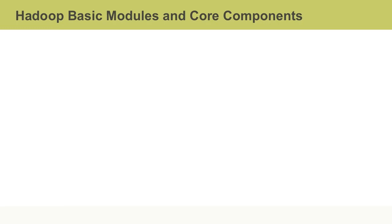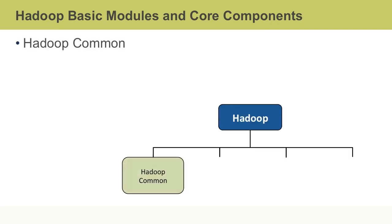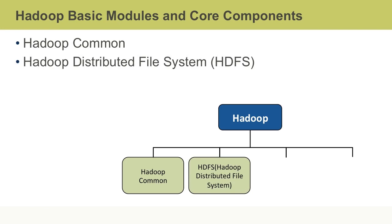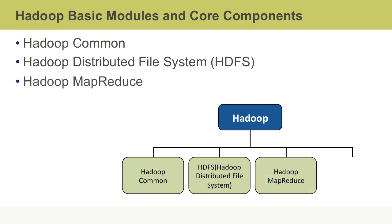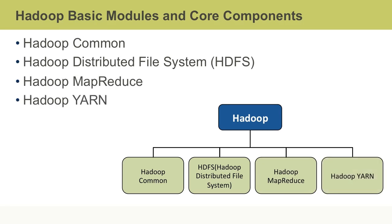The base Apache Hadoop framework is composed of four basic modules and two core components. The four modules include Hadoop Common, which contains libraries and utilities needed by other Hadoop modules; Hadoop Distributed File System, or HDFS, a distributed file system that stores data on commodity machines; Hadoop MapReduce, a programming model for large-scale data processing; and Hadoop YARN, a resource management platform responsible for managing competing resources in clusters and scheduling user applications.